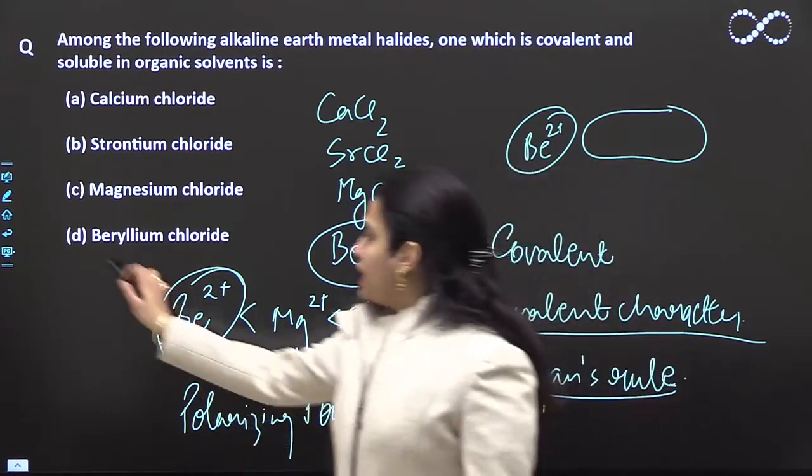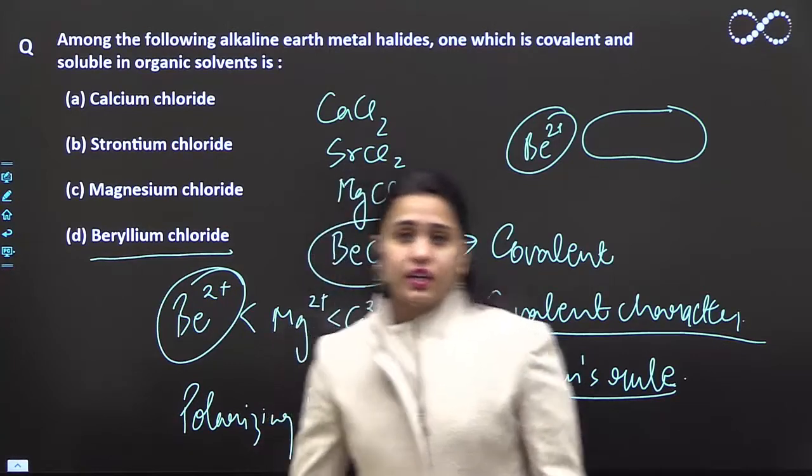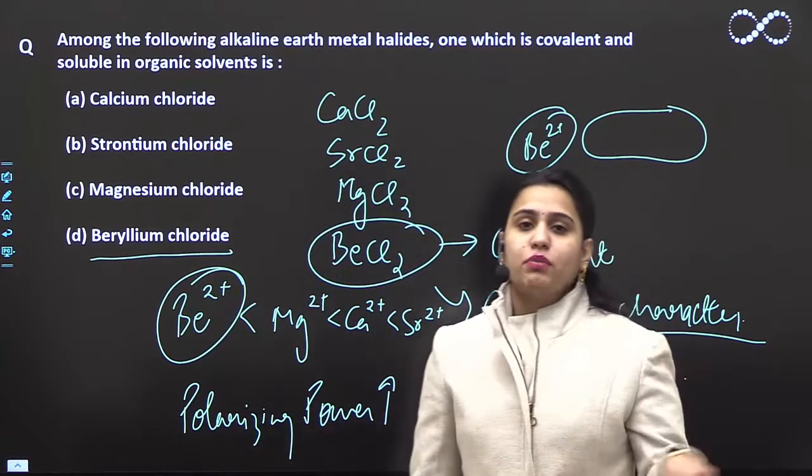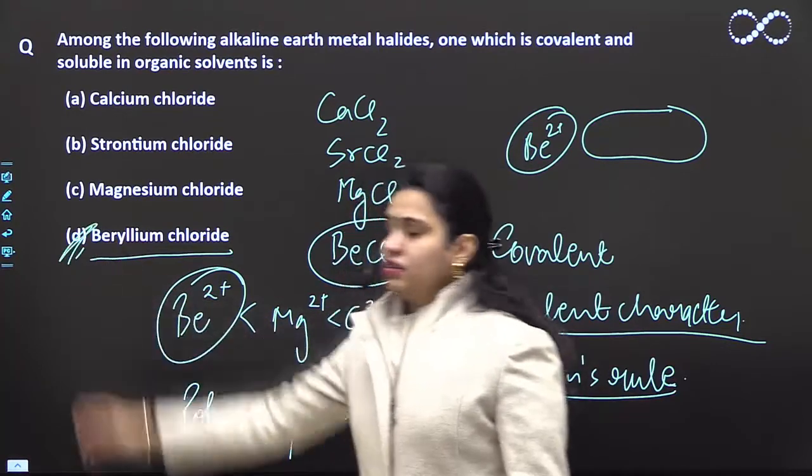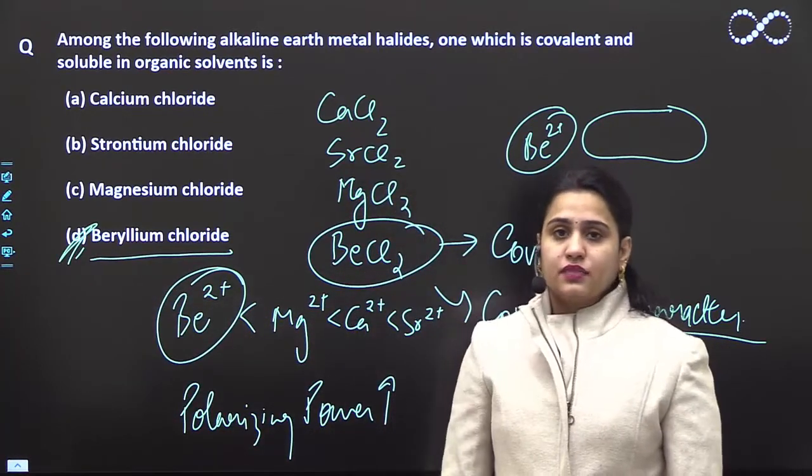So beryllium chloride will be predominantly covalent, and since it is covalent, it will be soluble in organic solvents. So D is the correct answer. Thank you.